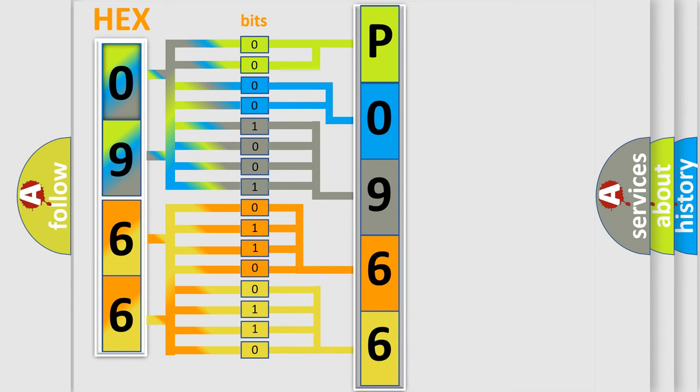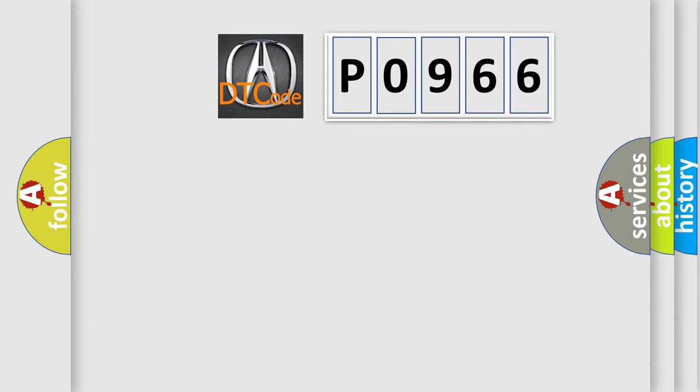We now know in what way the diagnostic tool translates the received information into a more comprehensible format. The number itself does not make sense to us if we cannot assign information about what it actually expresses. So, what does the diagnostic trouble code P0966 interpret specifically for car manufacturers?